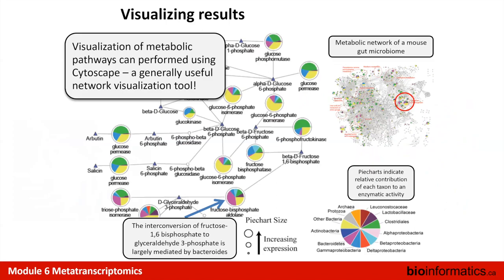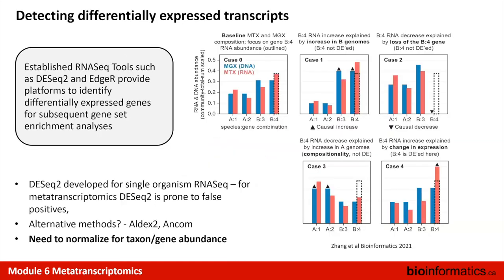Finally, for visualization we use Cytoscape as a network visualization tool - it creates nice figures and is quite intuitive. From a mouse metatranscriptome, we map gene expression data from different taxa onto each enzyme. For example, the enzyme involved in converting fructose-1,6-bisphosphate to glyceraldehyde-3-phosphate is largely mediated by Bacteroides. For differential expression in these complex metatranscriptome datasets, the statistics aren't quite appropriate for tools like DESeq2 or EdgeR, so we rely on new methods being developed for differential expression analysis.